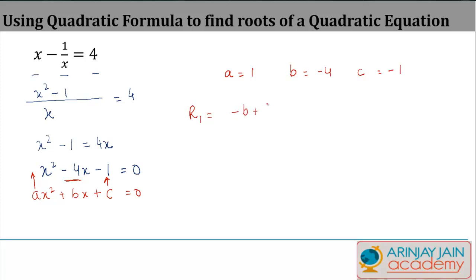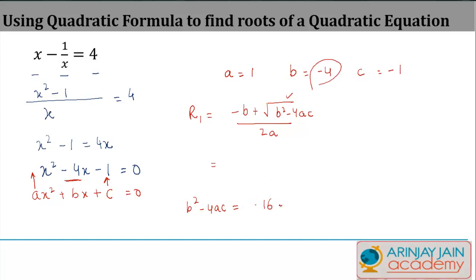Let me find out b squared minus 4ac. The first root is minus b plus square root of b squared minus 4ac divided by 2a. So b squared minus 4ac equals minus 4 squared, which is 16, minus 4 times a which is 1 and c which is minus 1. This gives 16 plus 4, which is 20.